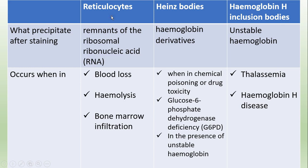Normally we can see remnants of RNA as reticulocytes. Heinz bodies are derivatives of hemoglobin. Hemoglobin H inclusion bodies are unstable hemoglobin. Hemoglobin H inclusion bodies can be seen in thalassemia patients.